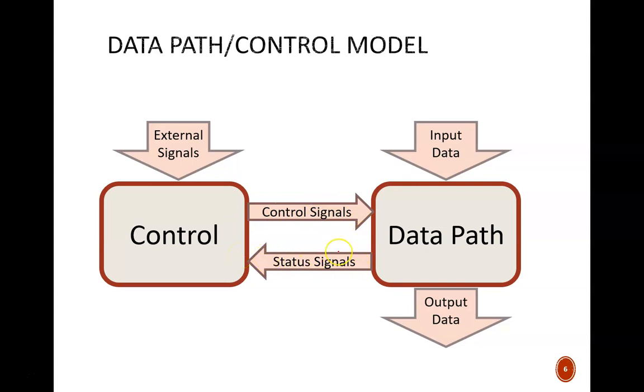The data path unit could be a combinational or a sequential circuit. In most cases, like our current example, it is sequential.